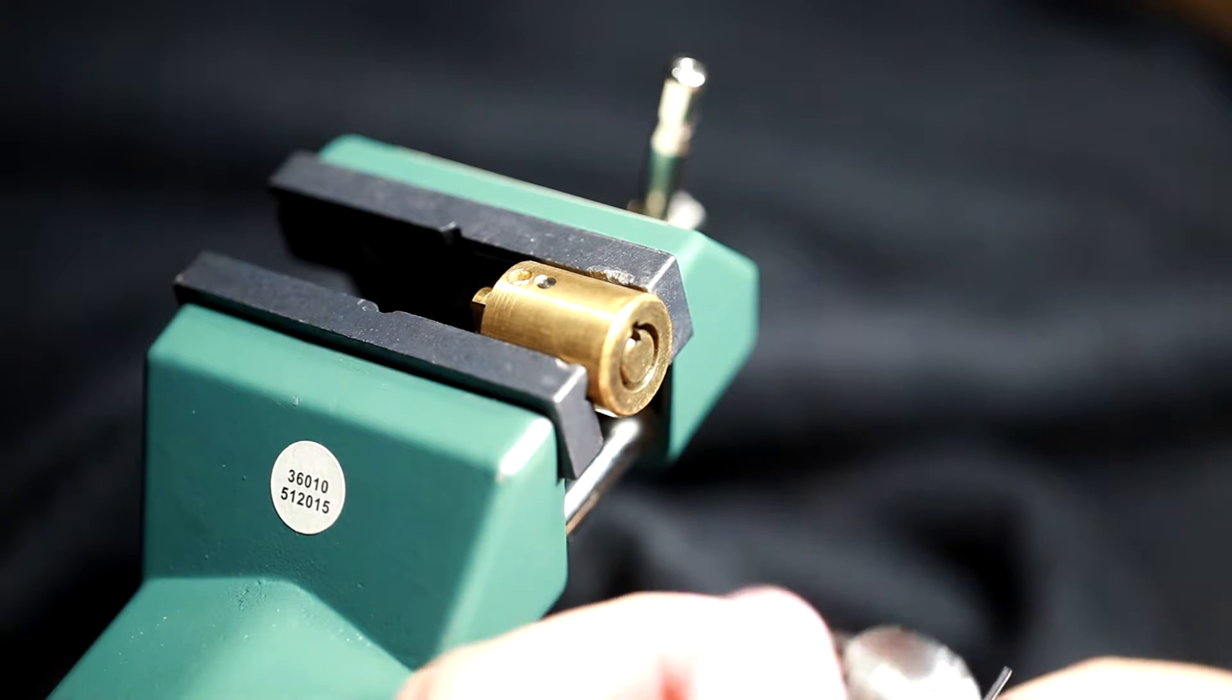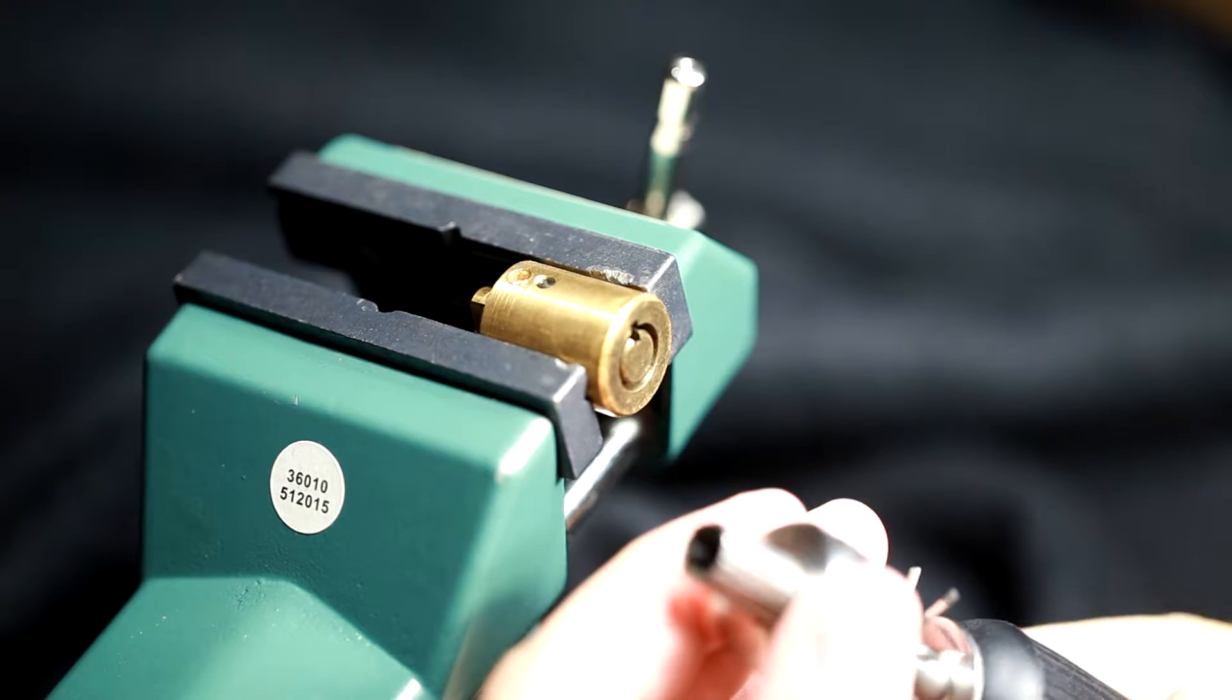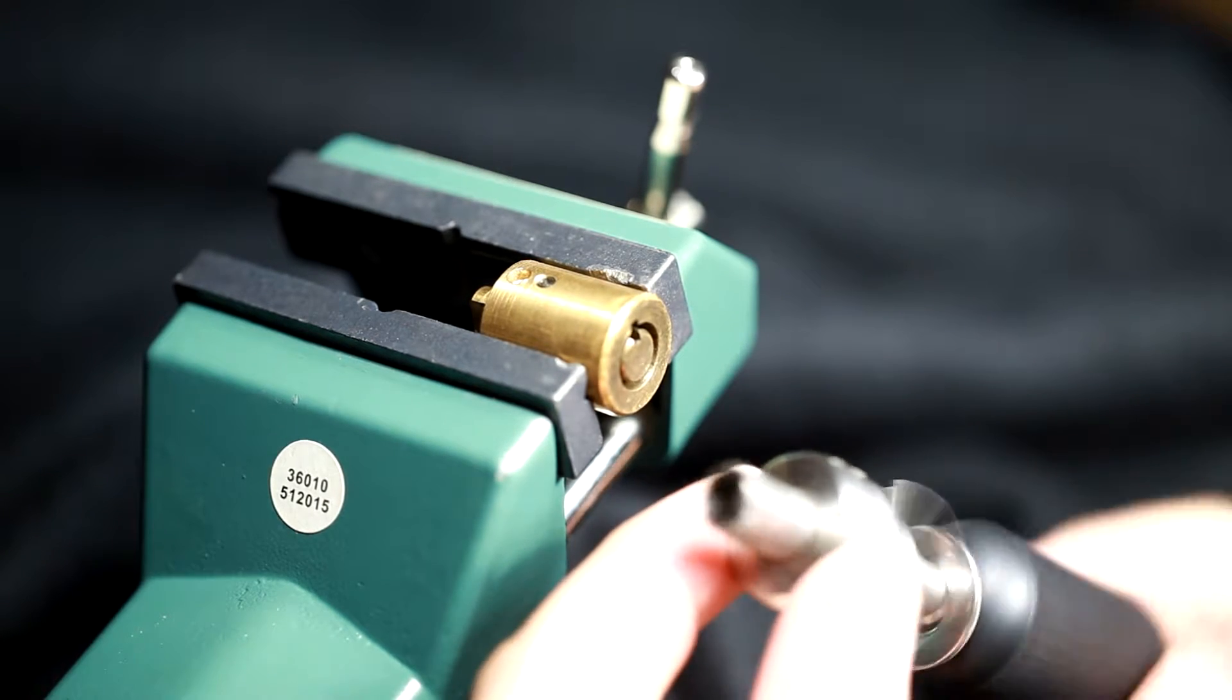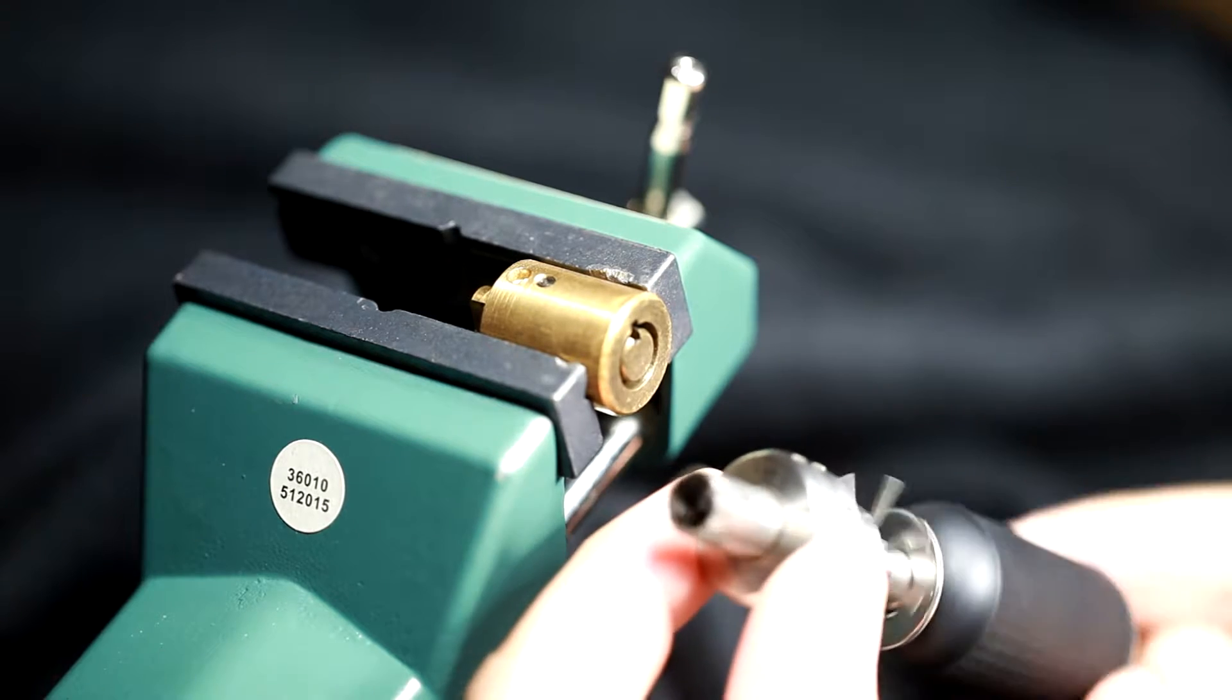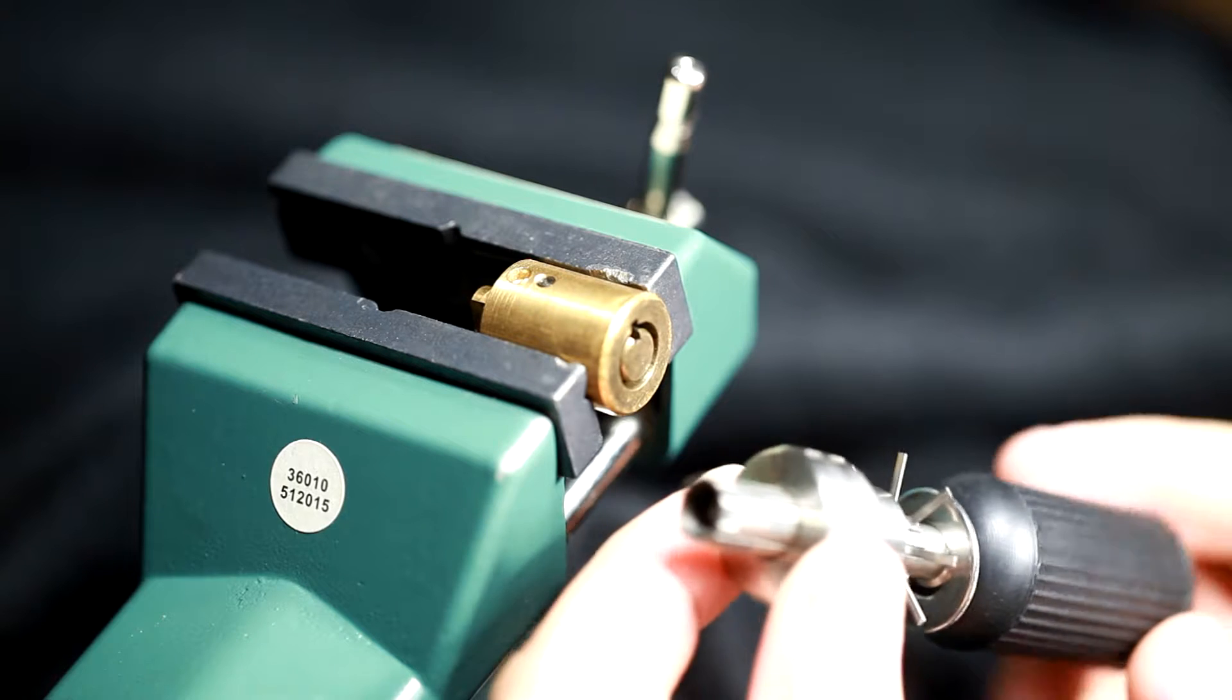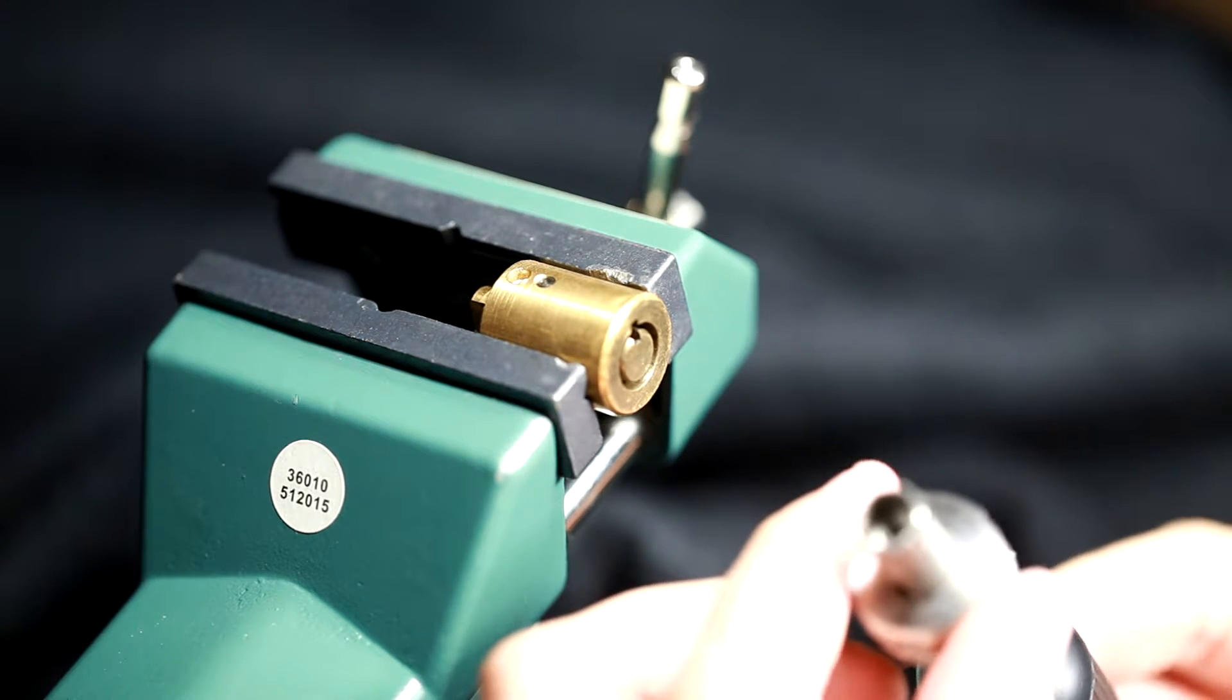Finding that threshold is pretty tricky from what I understand. What I have heard works best is if you have it kind of loose like this where it's just finger tight, and then you turn it like an eighth. And that seems to be just right.